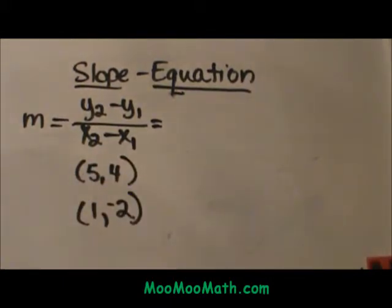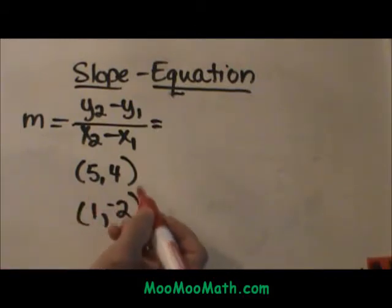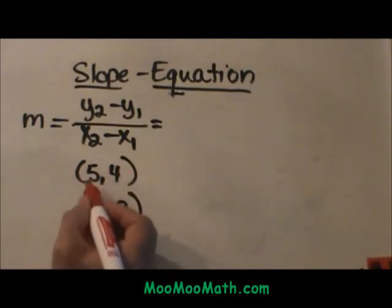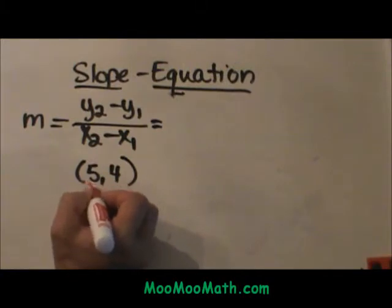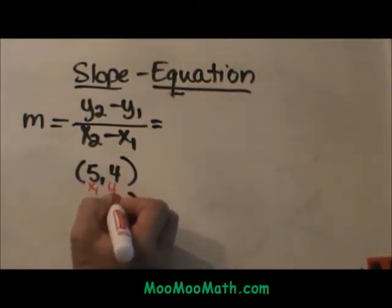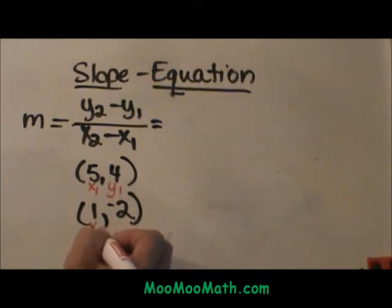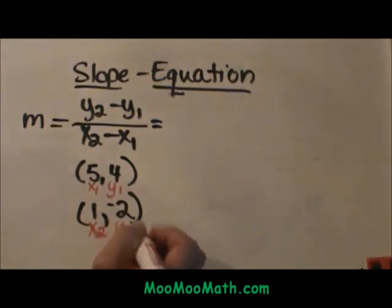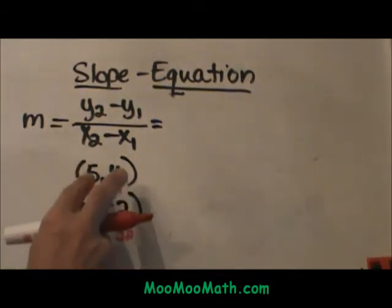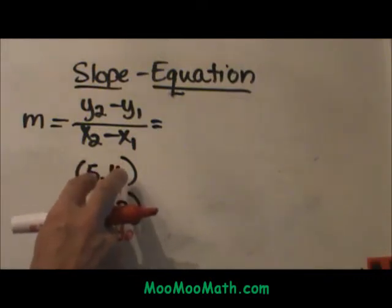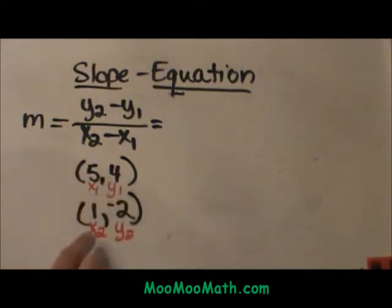Let's work through this example. I am going to label my ordered pairs as x1 and y1 and then the second pair is x2 and y2. Again these are interchangeable. I could make this top ordered pair x2, y2 and this bottom one x1, y1 but I just label them in the order they are given to me.